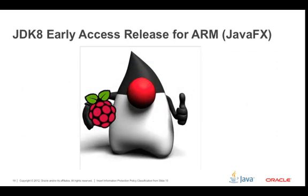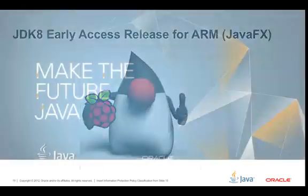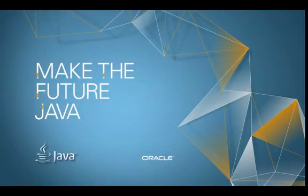The JDK Early Access release for ARM with JavaFX is out there, ready to use — kick the tires. Duke gives it a big thumbs up. Get it out there, run your Raspberry Pi on it. And don't forget: make the future Java.